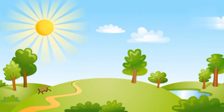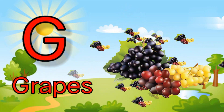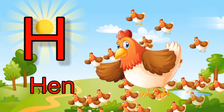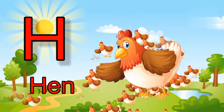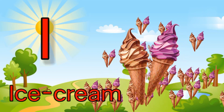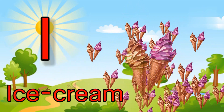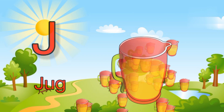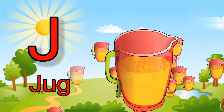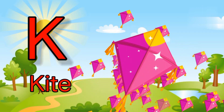G for Grape. H for Hen. I for Ice Cream. J for Jug. K for Kite.